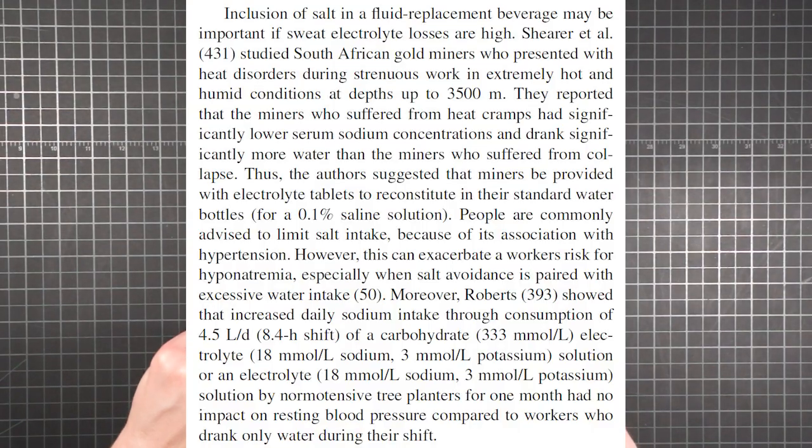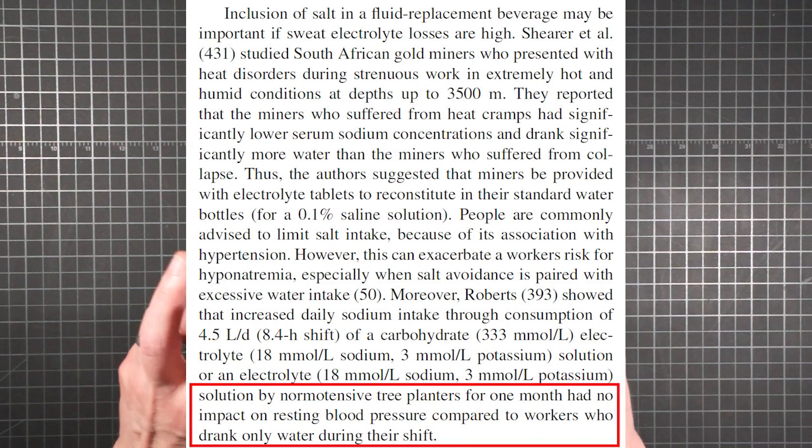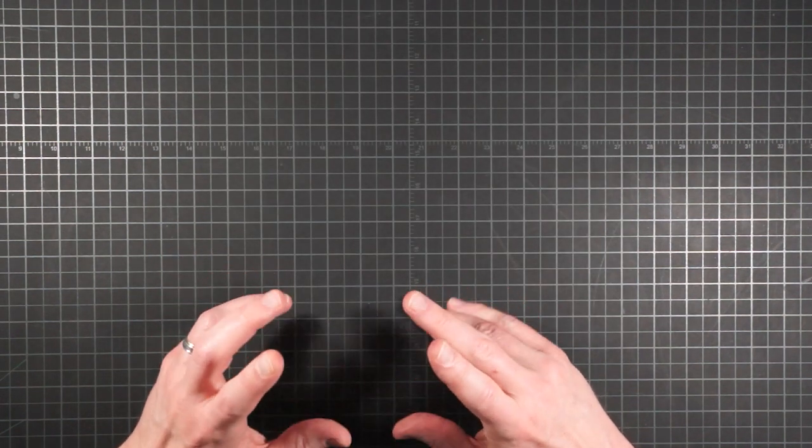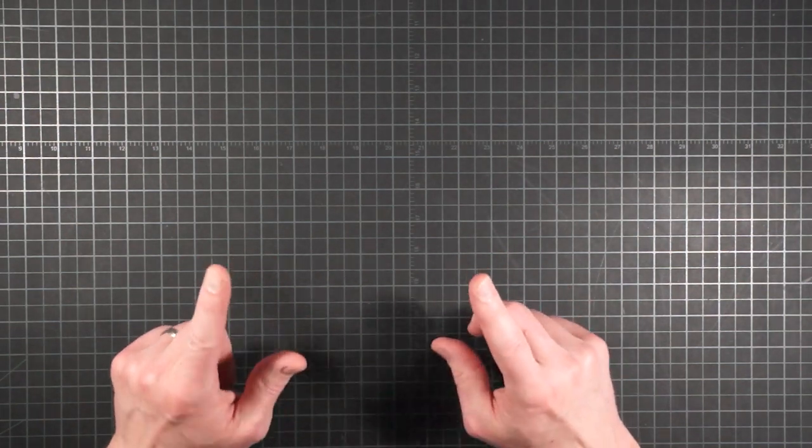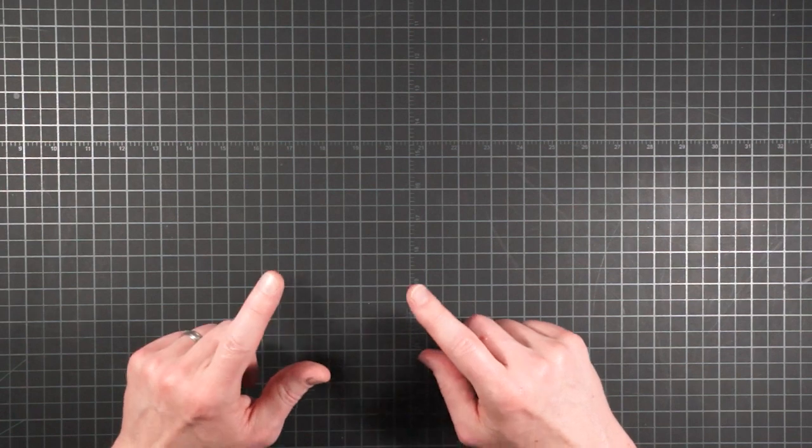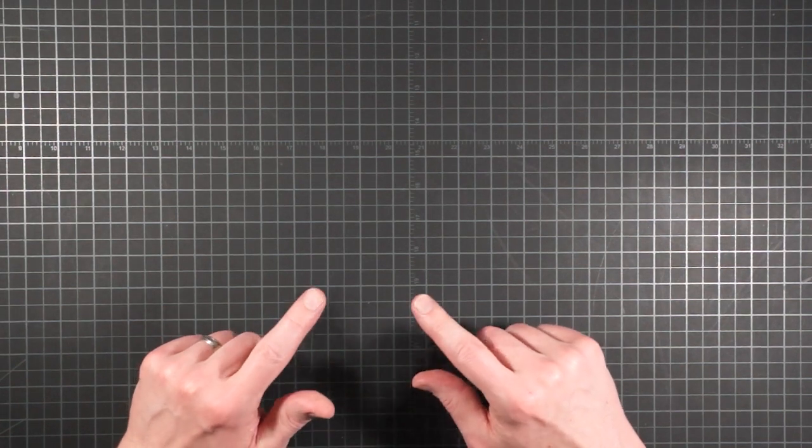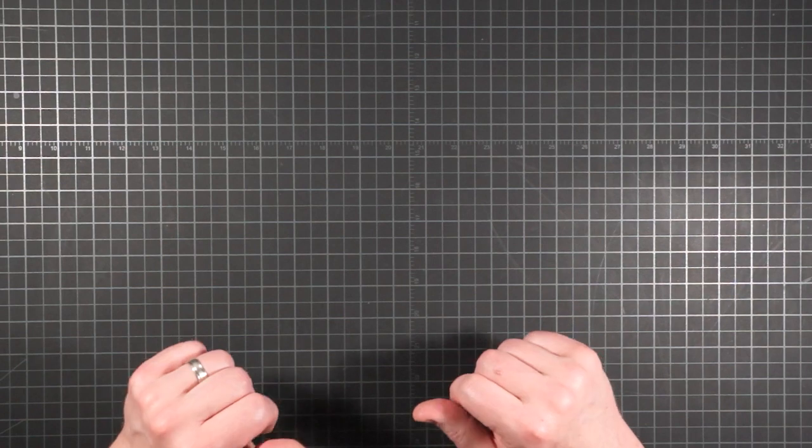OptiComp concludes by pointing out a study of tree planters who drank four and a half liters per day of a sodium potassium supplement for an entire month with no impact on resting blood pressure. Basically, the health website's low sodium recommendations don't account for people with high sweat losses. And if all you're doing is replacing lost electrolytes, increased dietary sodium doesn't raise your blood pressure.